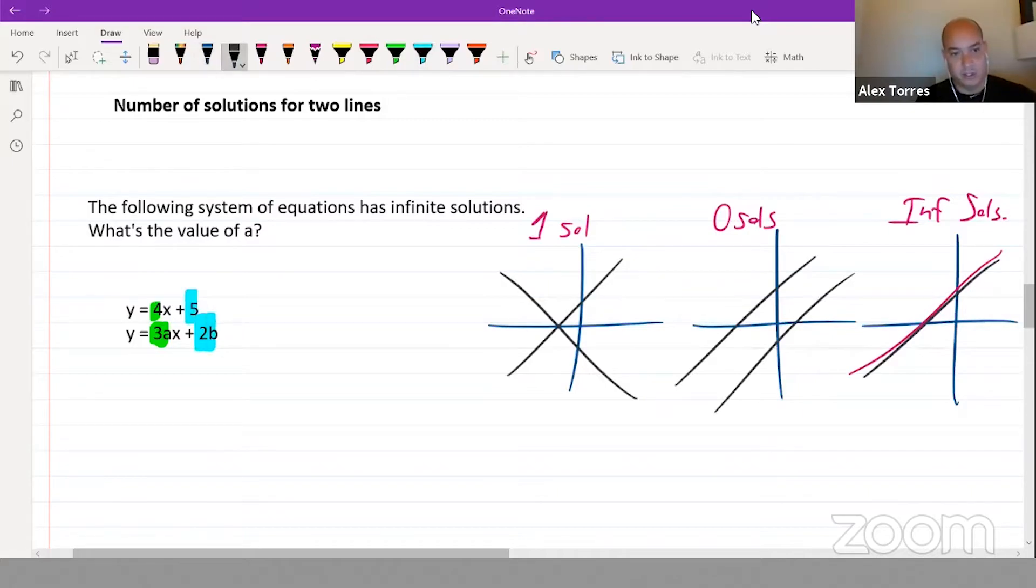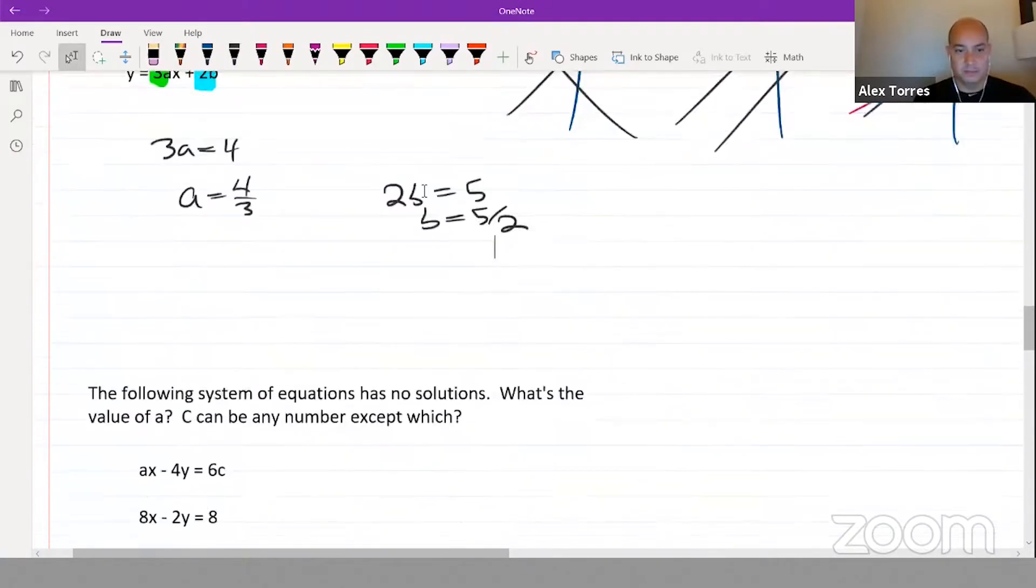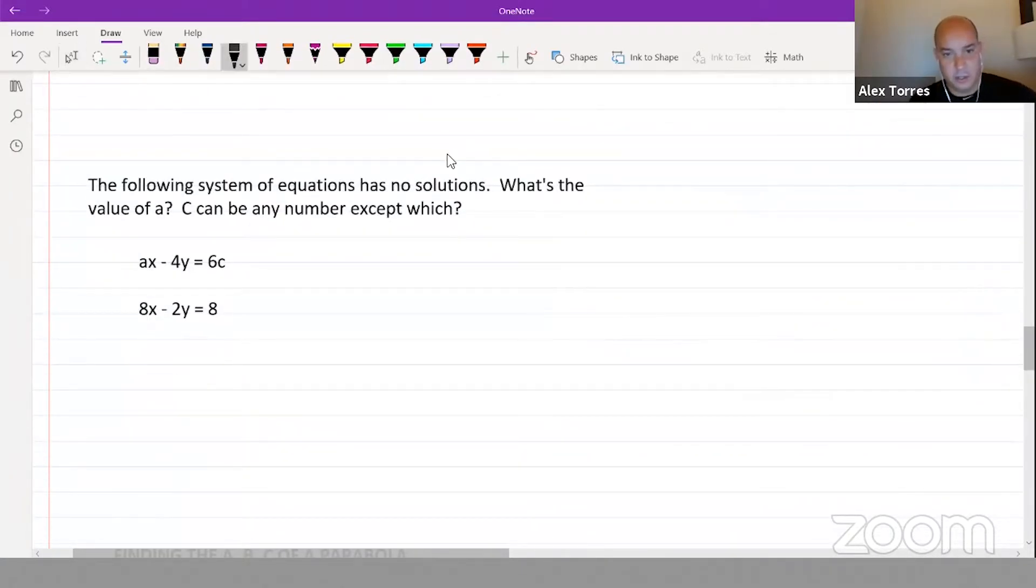We can solve for the variables by saying 3a equals 4, or we could have said 2b equals 5 and b would be equal to 5 over 2. So that's the idea of infinite solutions. Here we're being told there are no solutions.